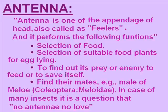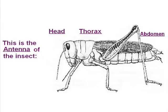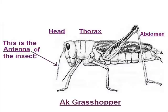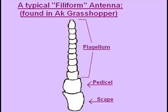In many insects, no antenna means no love, so we can say that the antenna is the love organ of an insect. In this picture you are looking at a typical or basic insect which we study in entomology, and the arrow is pointing towards the antenna of that insect. This insect is known as a grasshopper.